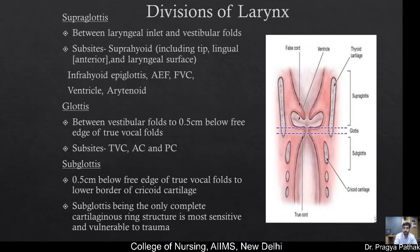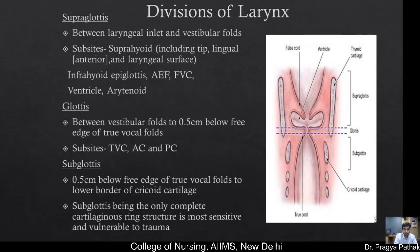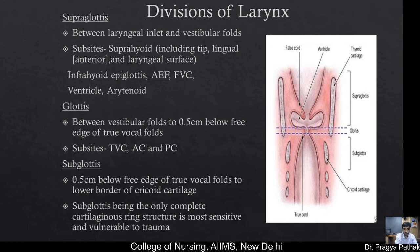The larynx is divided into three parts: the supraglottis, the glottis, and the subglottis. The supraglottis extends from the laryngeal inlet to the vestibular fold, involving the suprahyoid epiglottis with lingual and laryngeal surfaces, infrahyoid epiglottis, aryepiglottic fold, false vocal cord, ventricle, and arytenoids. The glottis ranges from the vestibular folds to 0.5 cm below the free edge of the true vocal cords. The subglottis extends from 0.5 cm below the free edge of true vocal folds to the lower border of the cricoid cartilage — the only complete cartilaginous ring structure, most sensitive and vulnerable to trauma.